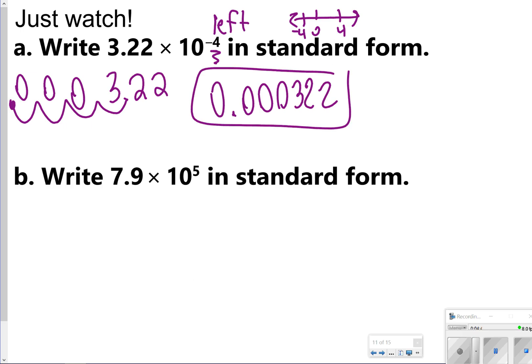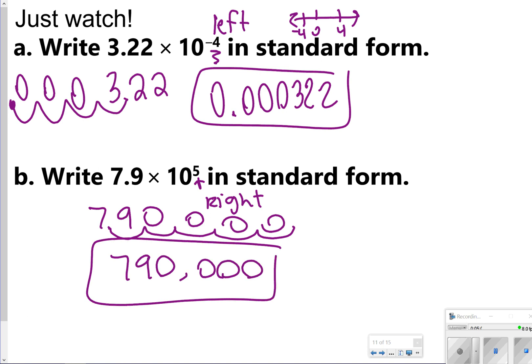Okay. For letter B, same type of deal except now we're going to the right because this is positive. So take 7.9 and just move it 5 steps to the right. 1, 2, 3, 4, 5. Fill in your empty spaces with zeros. So we'll have 790,000 for my answer in letter B.